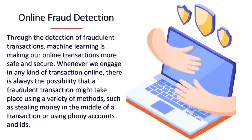Online fraud detection: through the detection of fraudulent transactions, machine learning is making our online transactions more safe and secure. Whenever we engage in any kind of transaction online, there is always the possibility that a fraudulent transaction might take place — such as stealing money mid-transaction or using phony accounts and IDs. The feed-forward neural network helps by verifying whether the transaction is legitimate or fraudulent. The output of each legitimate transaction is hashed, and the resulting values are used as input for the subsequent round. There is a unique pattern for each legitimate transaction, and this pattern shifts whenever there is a fraudulent transaction, allowing the system to identify fraud.